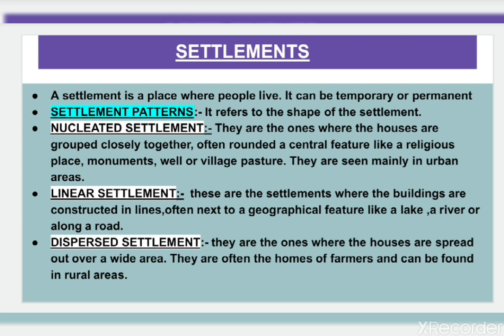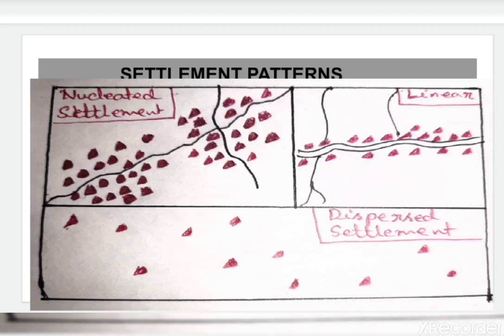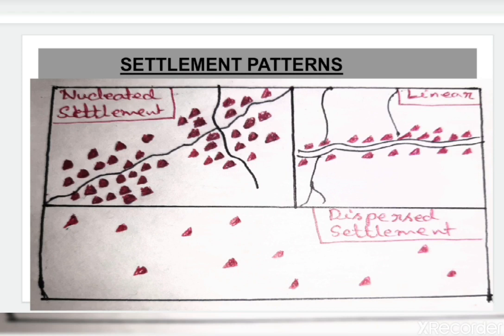Dispersed settlements are often the homes of farmers and can be found in rural areas. Looking at the diagram, the three patterns are: nucleated settlement, which is circular in shape; linear settlement, which forms along a road; and dispersed or scattered settlement, which is spread over a wide area.